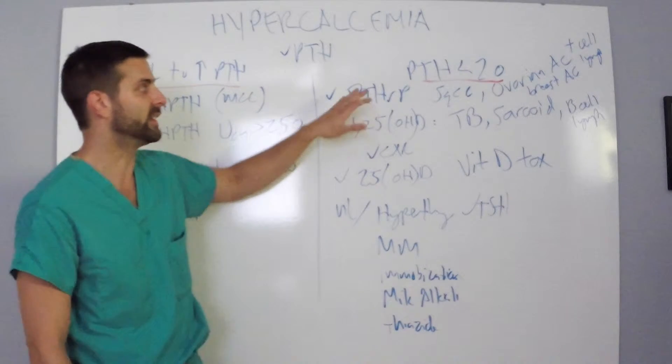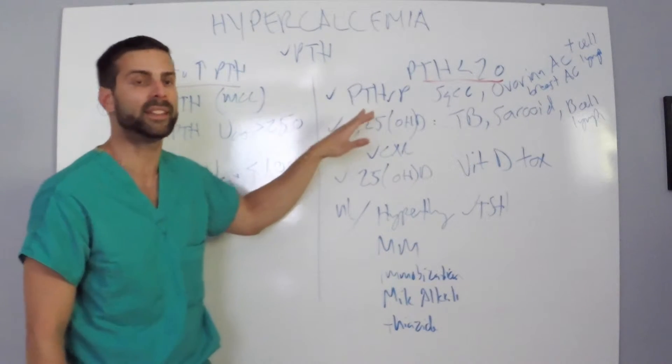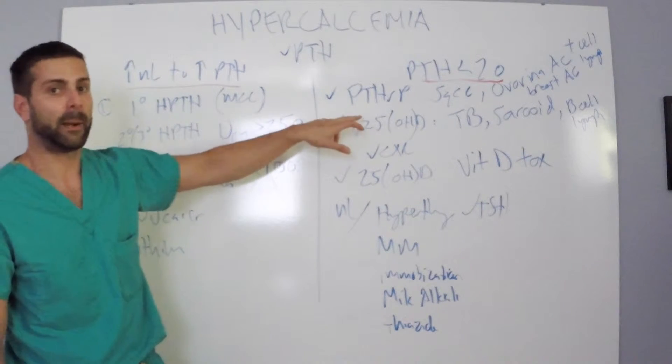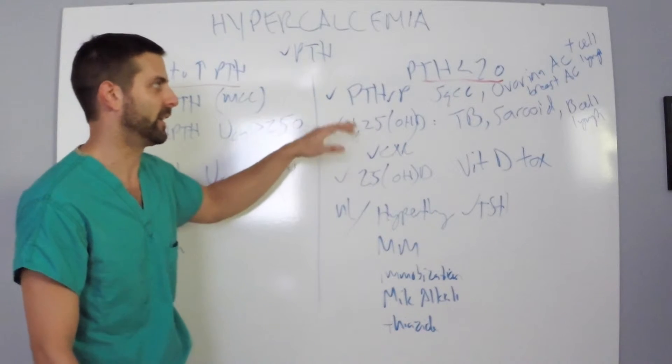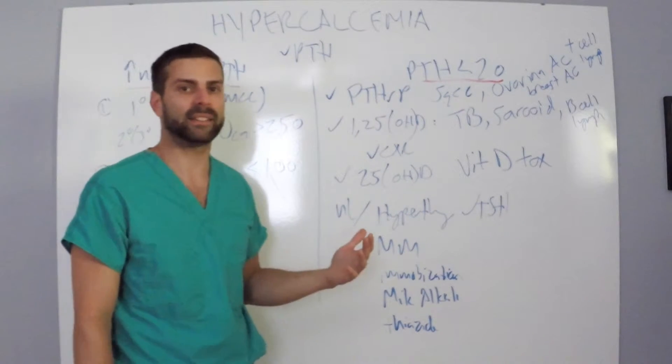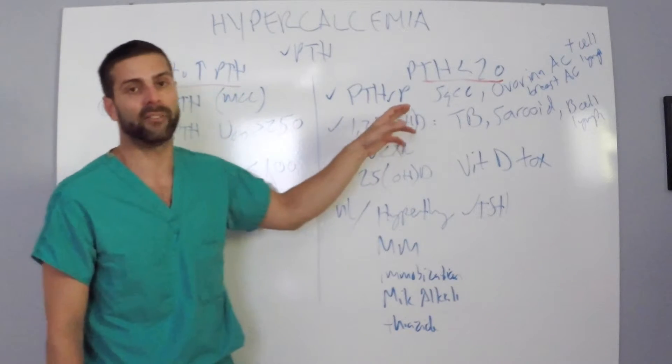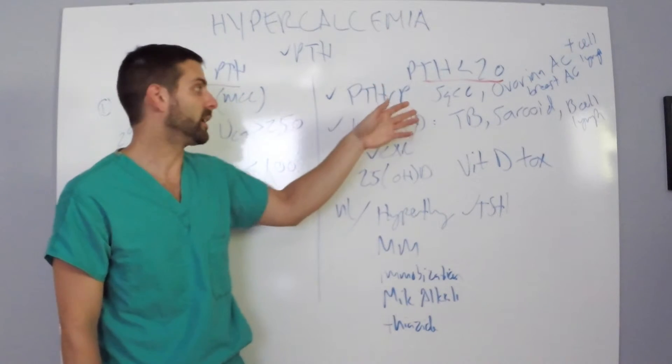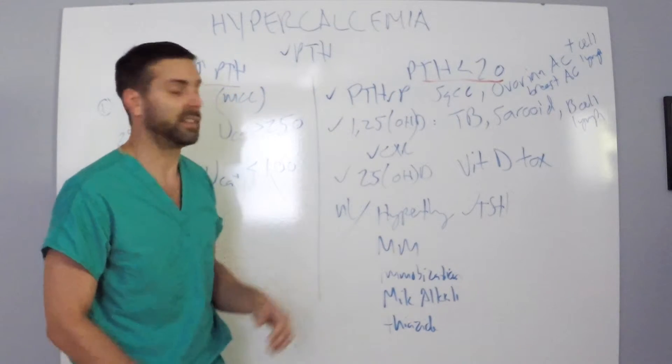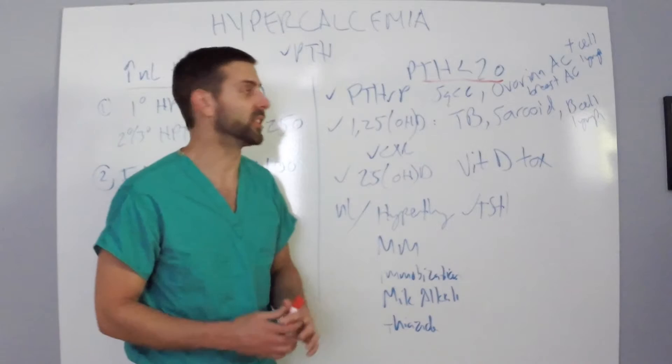Now the most common cause on this side of people who have a suppressed PTH is those who have a PTH-related peptide or protein. You'll be able to search for an underlying malignancy in these patients, find that they either have squamous cell lung cancer, ovarian or breast cancer, or a T cell lymphoma. There are other malignancies that cause it as well.